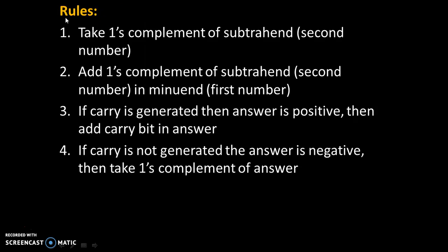Let's try to understand the rules of binary subtraction by one's complement method. Rule No. 1: Take one's complement of the second number. Rule No. 2: Add one's complement of the second number to the first number. Rule No. 3: If carry is generated, then the answer is positive — add the carry bit to the answer. Rule No. 4: If carry is not generated, then the answer is negative — take one's complement of the answer.